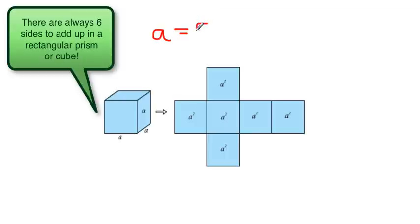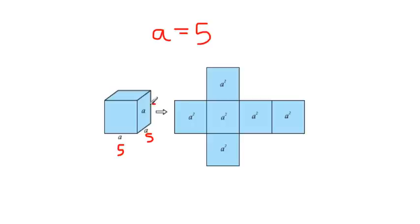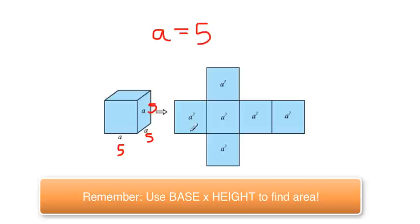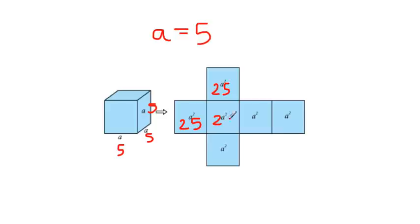Let's pretend that A is five. When we have a cube, all sides are the same. To find the area of just one side, we would do 5 times 5, so each square is going to have an area of 25. Since this is a cube and all squares have the same area, we put the area in each square for each side. Then you could do 25 times 6, or add 25 six times, and that gives you the total surface area of this cube.